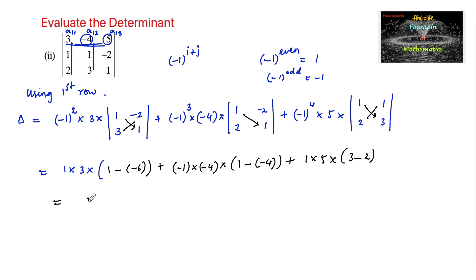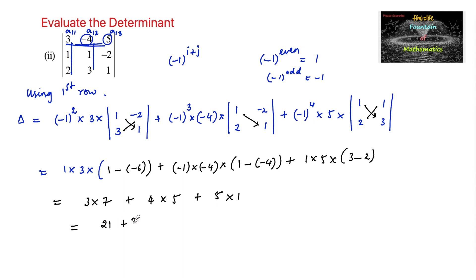Now calculating: 3 × 7 = 21, plus 4 × 5 = 20, plus 5 × 1 = 5. So 21 + 20 + 5 = 46. Therefore, the determinant value is 46.